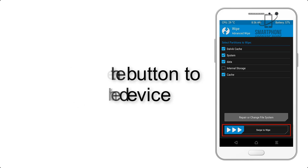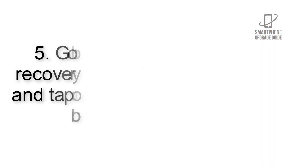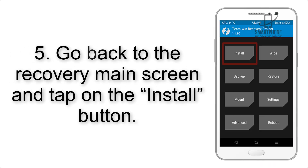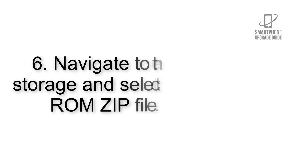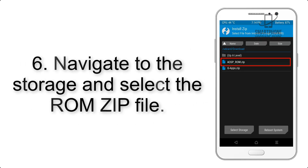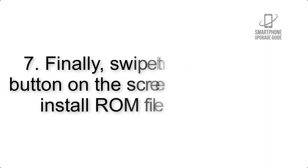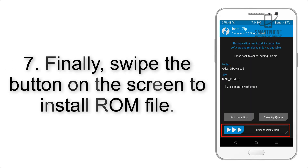Step 4: Swipe the button to wipe the device. Step 5: Go back to the recovery main screen and tap on the Install button. Step 6: Navigate to the storage and select the ROM zip file.